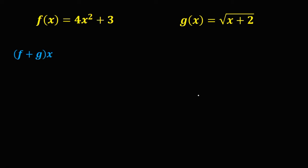Let's understand the operation of functions with one function as a radical. We have two given functions: f(x) = 4x² + 3, and g(x) = √(x + 2).